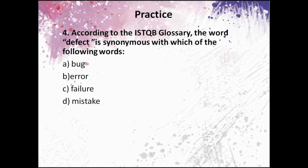Fourth question: According to the ISTQB glossary, the word defect is synonymous with which of the following words: Bug, error, failure, mistake. We know that defect has synonyms like bug, fault and problem. So, here there is bug. There is no fault and problem. So, A is the correct answer.